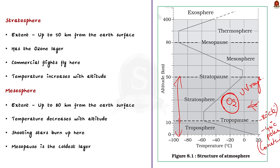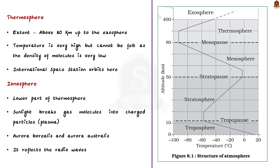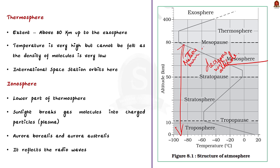After the stratosphere, we have the stratopause, where the temperature will be around 0 degrees Celsius. Moving on to the mesosphere, it is located above the stratosphere and extends up to a height of 80 kilometers above the Earth's surface. Temperature in the mesosphere decreases with altitude, reaching around minus 100 degrees Celsius at 80 kilometers from the Earth's surface. Another significance of this layer is that meteors burn up here, creating shooting stars. After the mesosphere, we have the mesopause, which is the coldest of all the atmospheric layers.